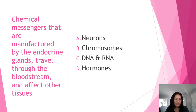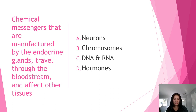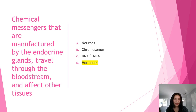Next question: chemical messengers that are manufactured by the endocrine glands, travel through the bloodstream, and affect other tissues — what are they? A) neurons, B) chromosomes, C) DNA and RNA, or D) hormones? The answer is D, hormones. Hormones are the body's chemical messengers; they carry information and instructions from one set of cells to another, and the endocrine system influences almost every cell, organ, and function of our bodies.